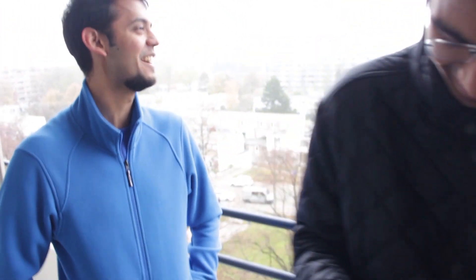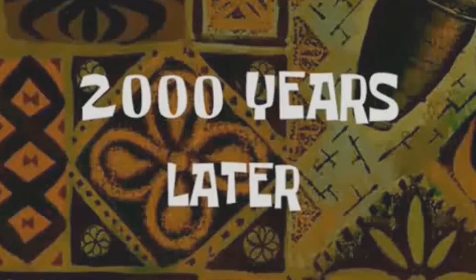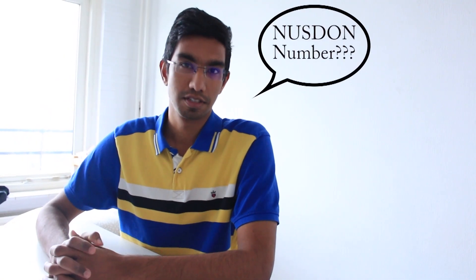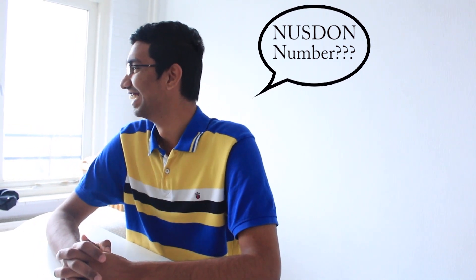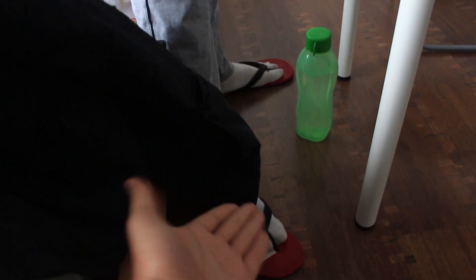[Bloopers: Various takes including 'What are you doing Kushat? I'm trying to figure out how this works,' multiple attempts at the introduction 'Hey everyone I'm Nicholas and I'm Kushat, we're the two broke scientists,' pronunciation attempts of 'Knudsen number,' and alternate outro takes.]